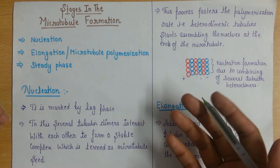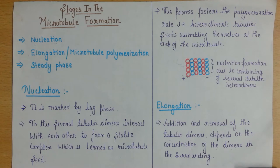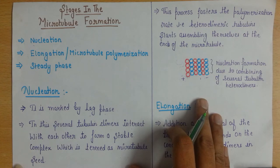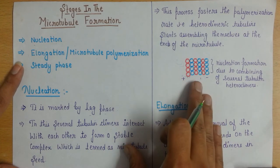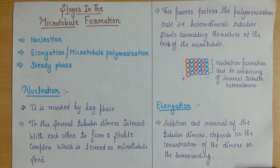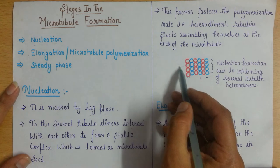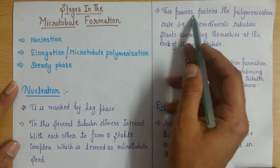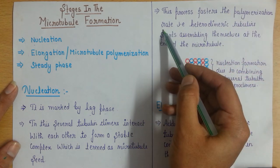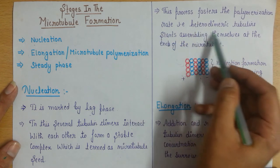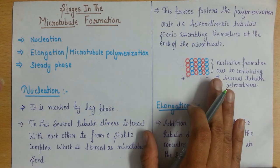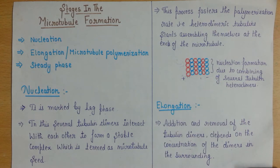After the nucleation phase is over, some subunits have combined to form a nucleus, a complex has been formed. The nucleus formation has one particular reason: so that the polymerization rate can happen at a faster amount. The heterodimer units come from both ends and bind quickly to form the microtubule. This process fastens the polymerization rate — that is the purpose of the nucleation phase.